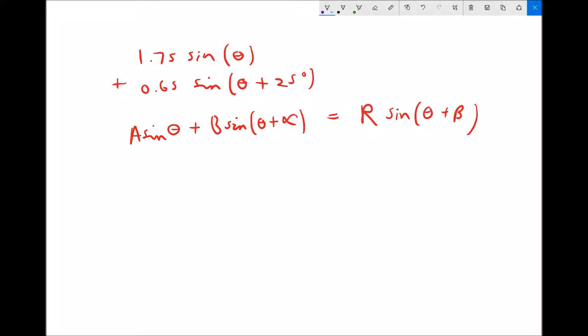Now what we can see here is that a corresponds with the sin(θ) value where no phase angle is being applied. Therefore our a value is 1.75, and b corresponds with the function where there is a phase angle being applied. Therefore 0.65 is our value of b, and we have our value of α of 25°.